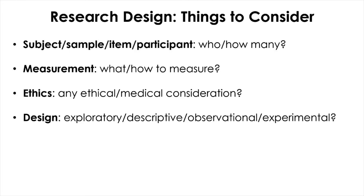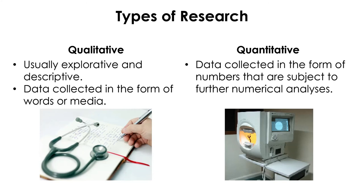Research design can be categorized in different ways based on different aspects of research. For example, a research can be mainly qualitative or quantitative depending on the nature of data collected. If you intend to collect data in the form of words or media, this is categorized as qualitative research — most qualitative research is usually exploratory and descriptive. On the other hand, if data are collected in the form of numbers, it is categorized as quantitative research, and the data are subject to further numerical analysis.